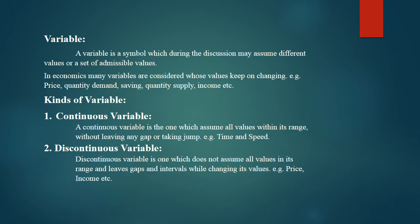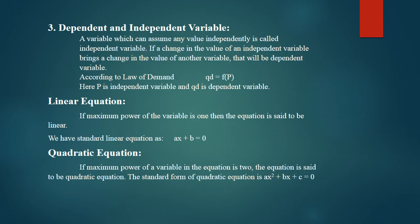The next type is independent and dependent variables. A variable which can assume any value independently is called the independent variable. If a change in the value of the independent variable brings a change in the value of another variable, that other variable will be the dependent variable.